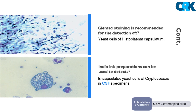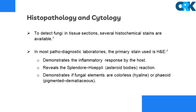Giemsa staining of smears is recommended for the detection of yeast cells of Histoplasma capsulatum. India ink preparations can be used to detect encapsulated yeast cells of Cryptococcus in cerebrospinal fluid specimens. To detect fungi in tissue sections, several histochemical stains are available. In most pathodiagnostic laboratories, the primary stain used on all tissue sections is hematoxylin and eosin, which demonstrates the inflammatory response by the host, reveals the Splendore-Hoeppli or asteroid body reaction, and demonstrates whether fungal elements are colorless, hyaline, phaeoid, or pigmented (dematiaceous).